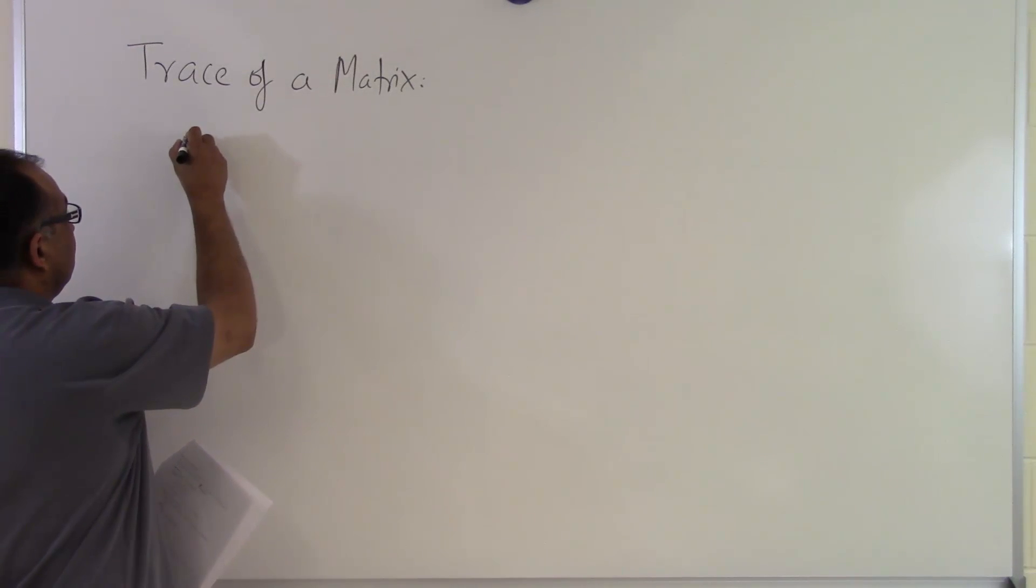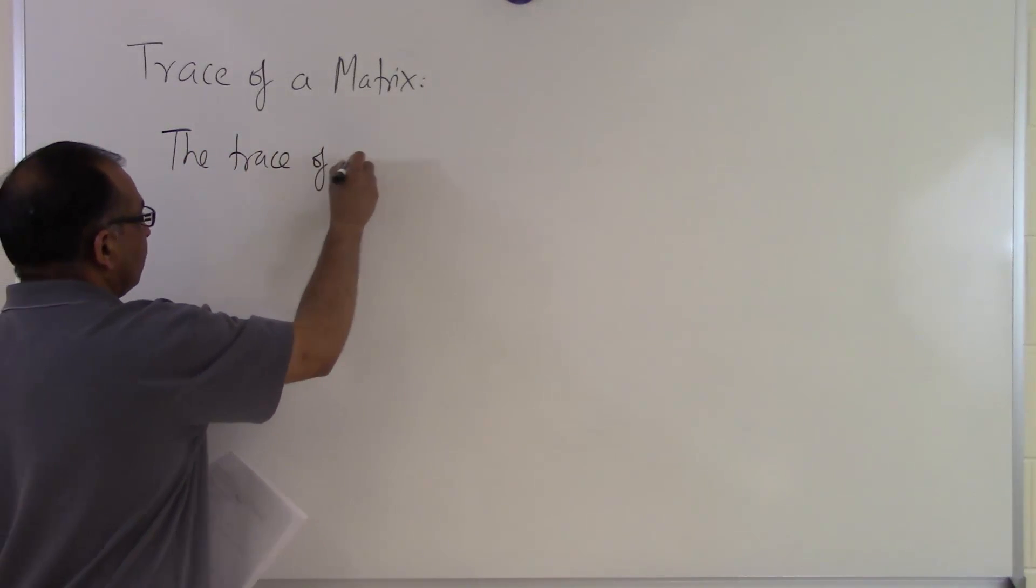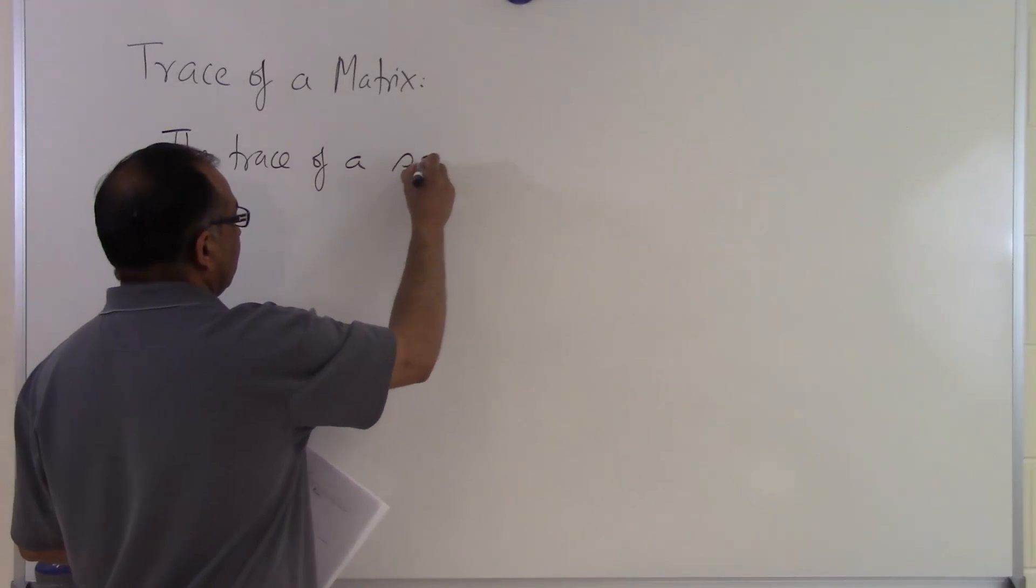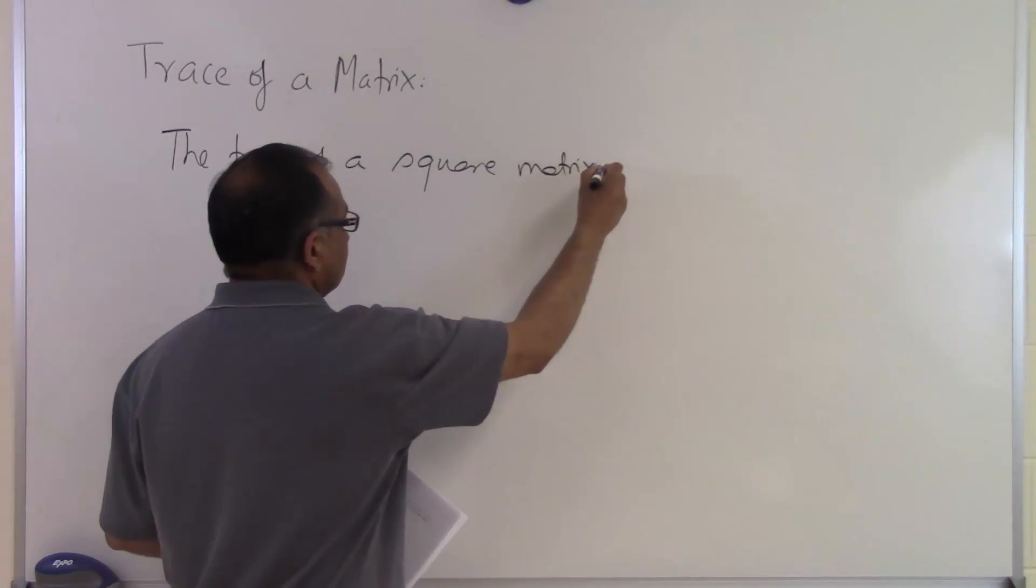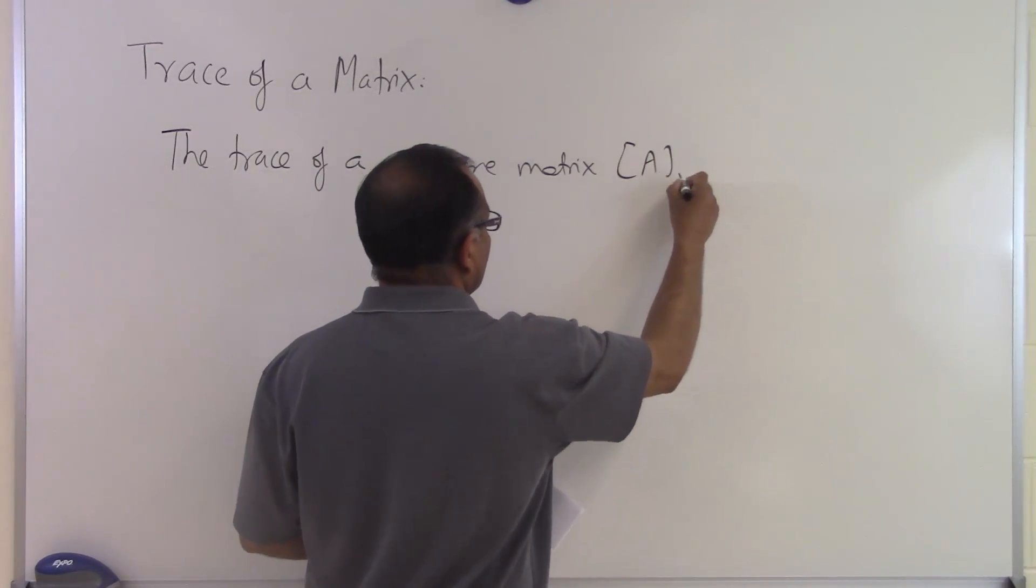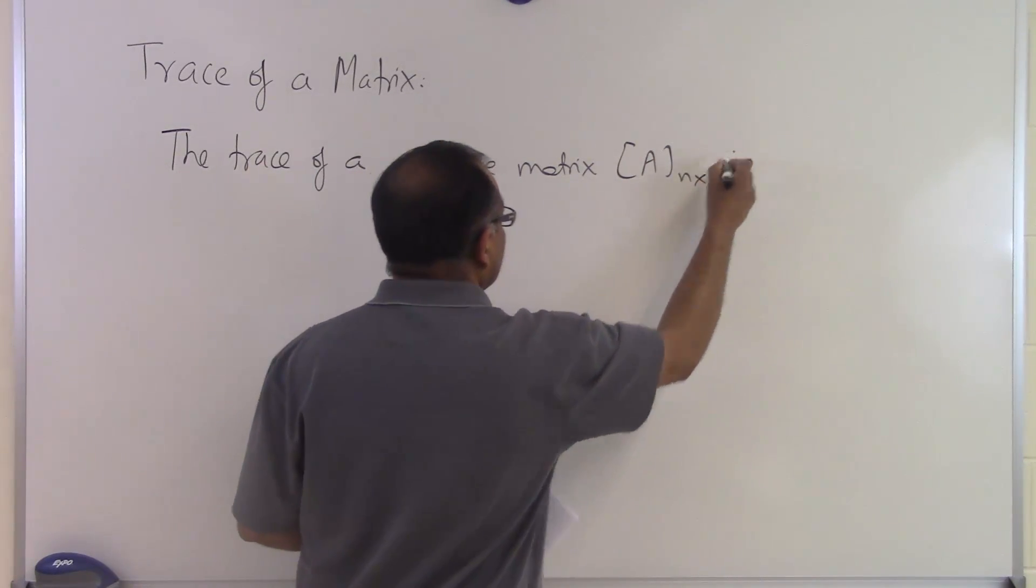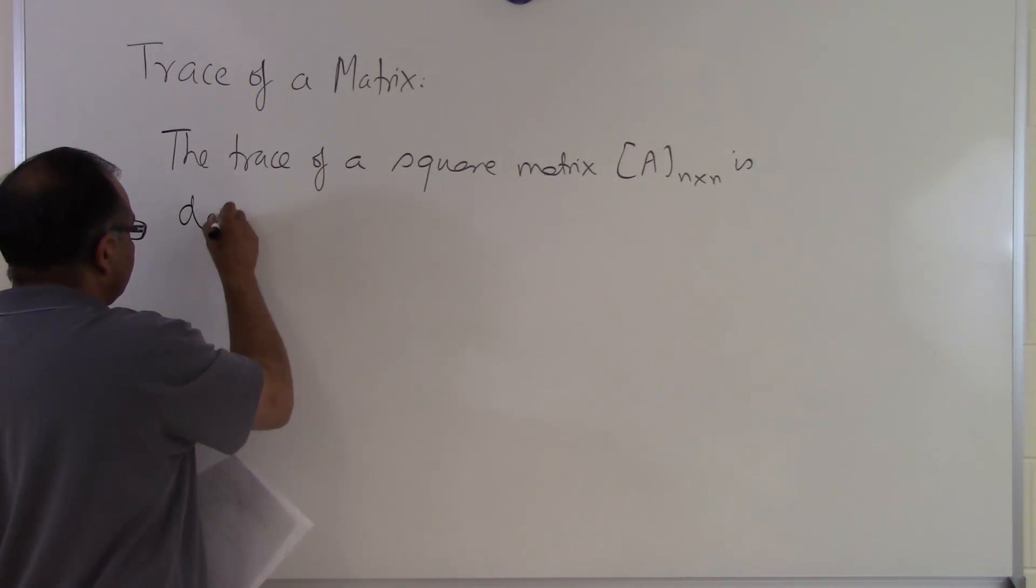First, the matrix has to be square. So the trace of a square matrix A, which has n rows and n columns, is defined as